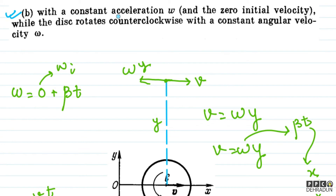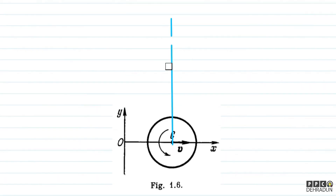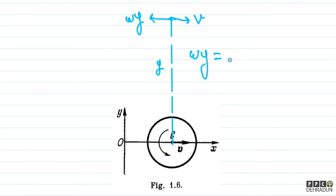Now let's come to the second part of the question, in which it is said that center c is moving with constant acceleration w, but initial velocity is 0, and the disk is rotating counterclockwise with constant angular velocity omega. The procedure remains exactly the same — we need to find a point at y distance such that v to the right equals omega times y to the left. This time omega is constant, so we set omega times y equal to v. And v equals u plus at, meaning v equals w times t.